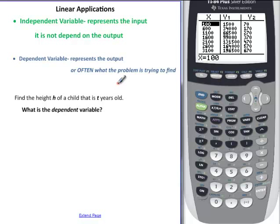So if I had a problem that asked me the height h of a child that is t years old, if I want to think about the dependent variable, it's asking me to find the height of a child that is t years old, so the dependent variable would be the height.